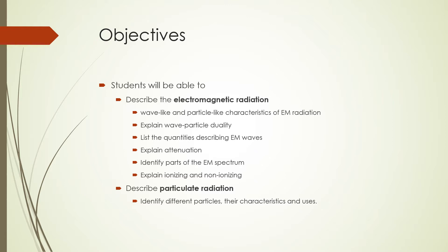Students will learn to describe the wave-like and particle-like characteristics of electromagnetic radiation. We shall explain wave-particle duality, explain attenuation, and list the quantities describing electromagnetic waves. Students will also be able to identify parts of the electromagnetic radiation spectrum, explain ionizing and non-ionizing radiation, learn about particulate radiation, and identify different particles, their characteristics, and uses.